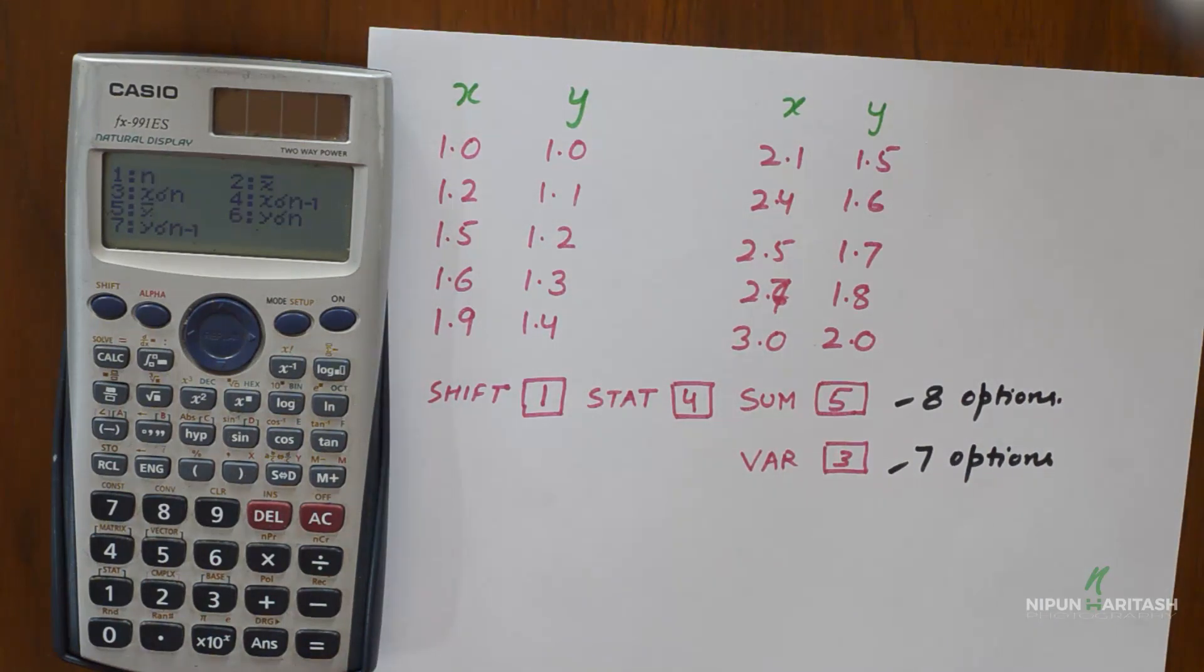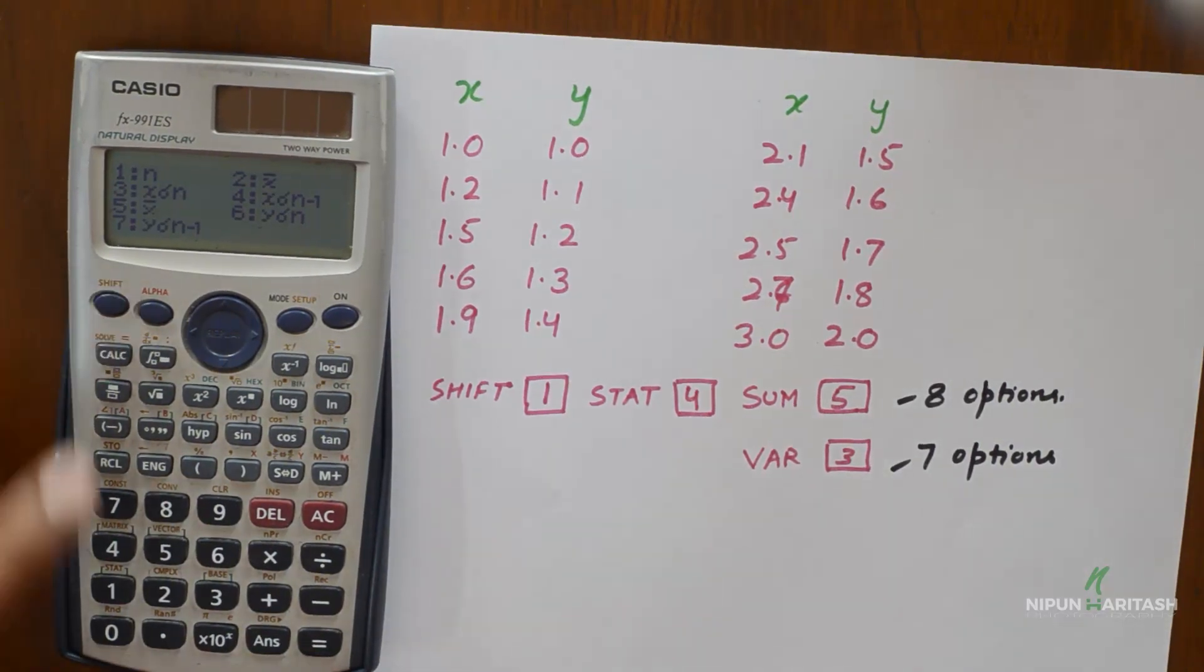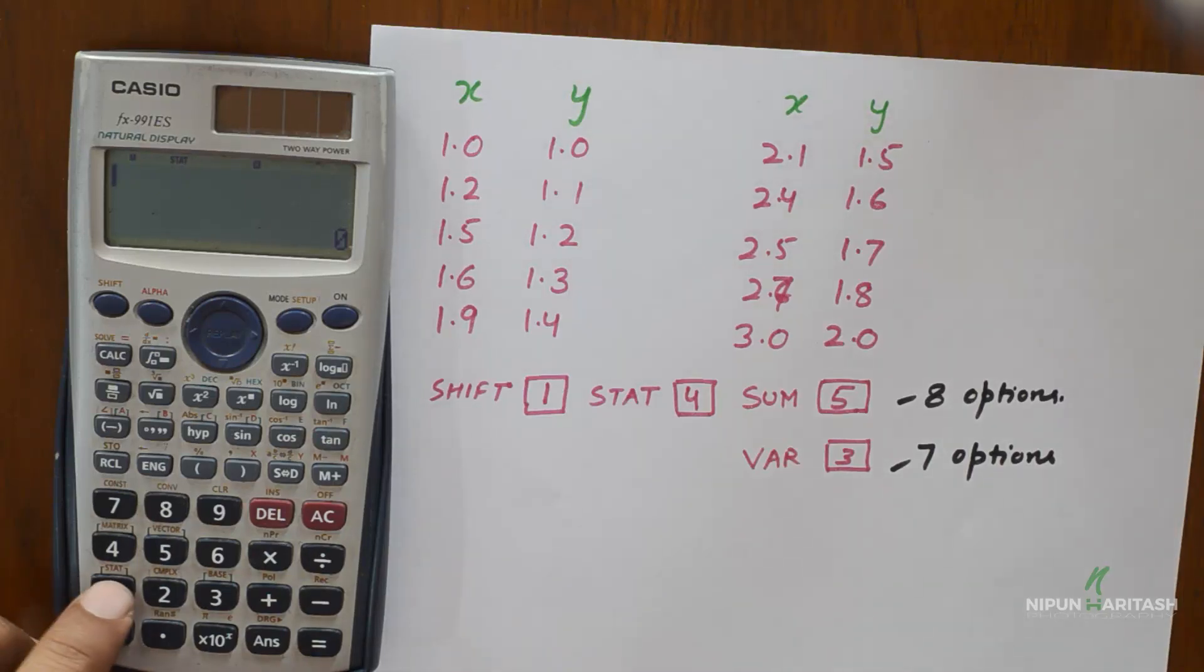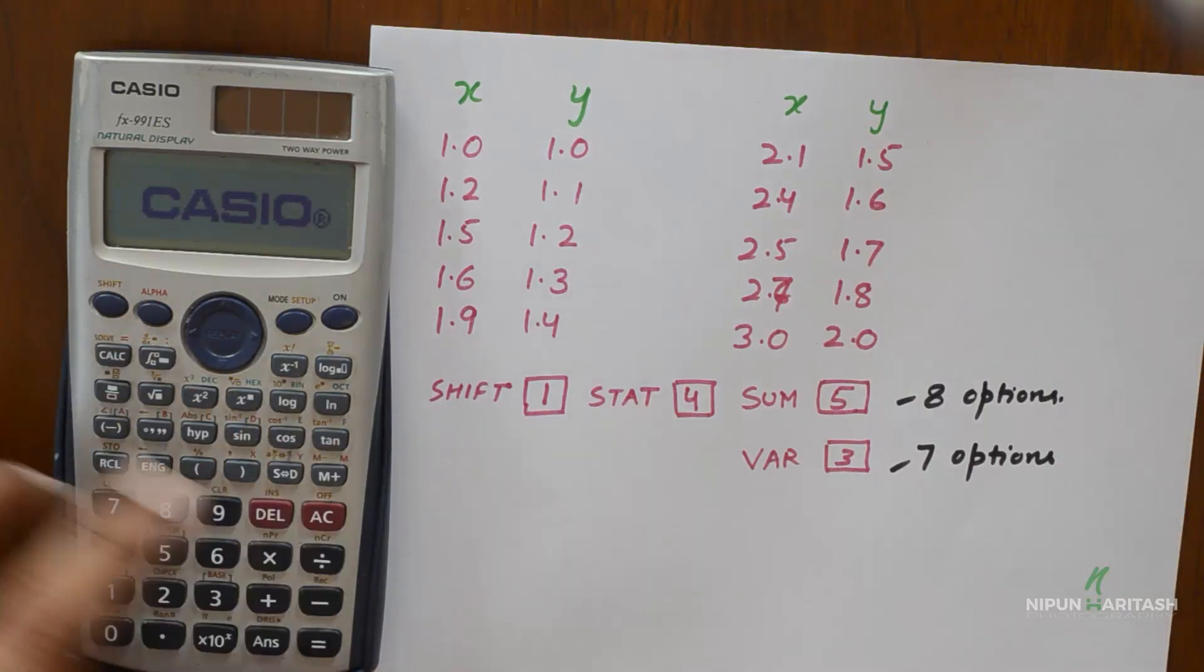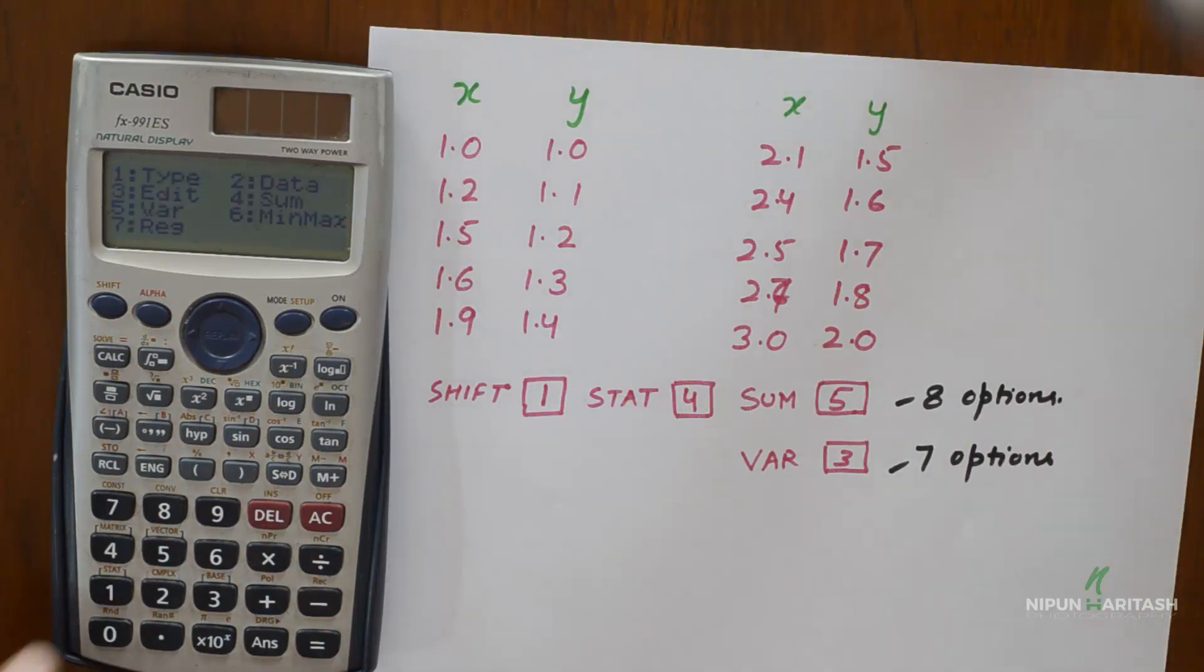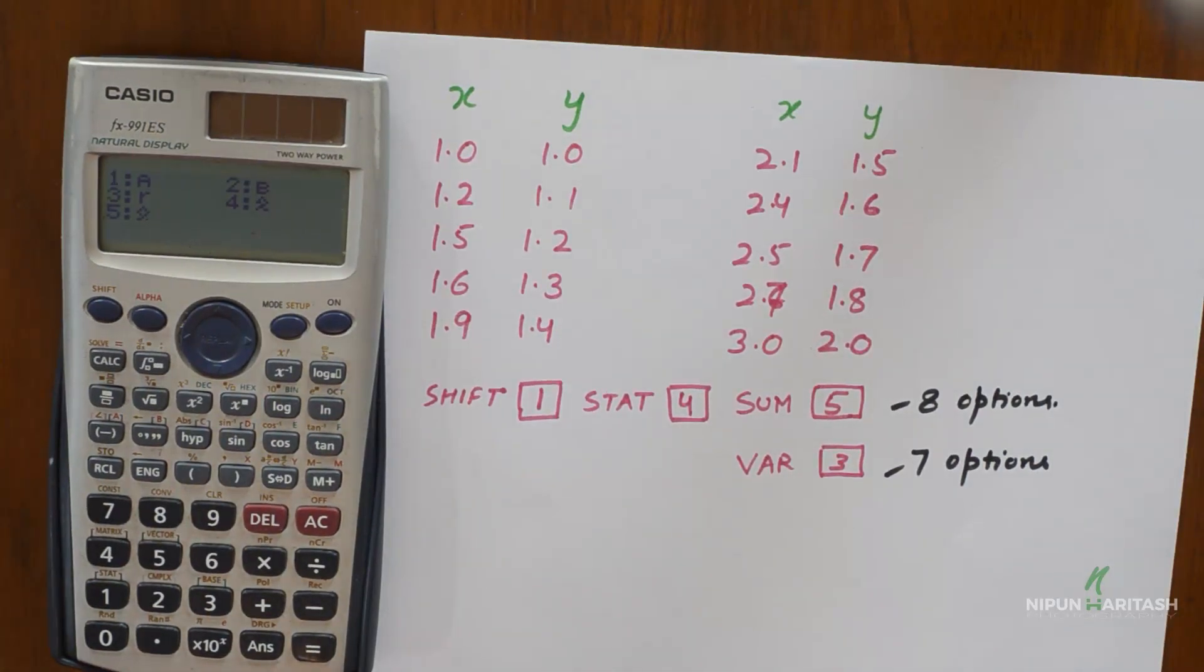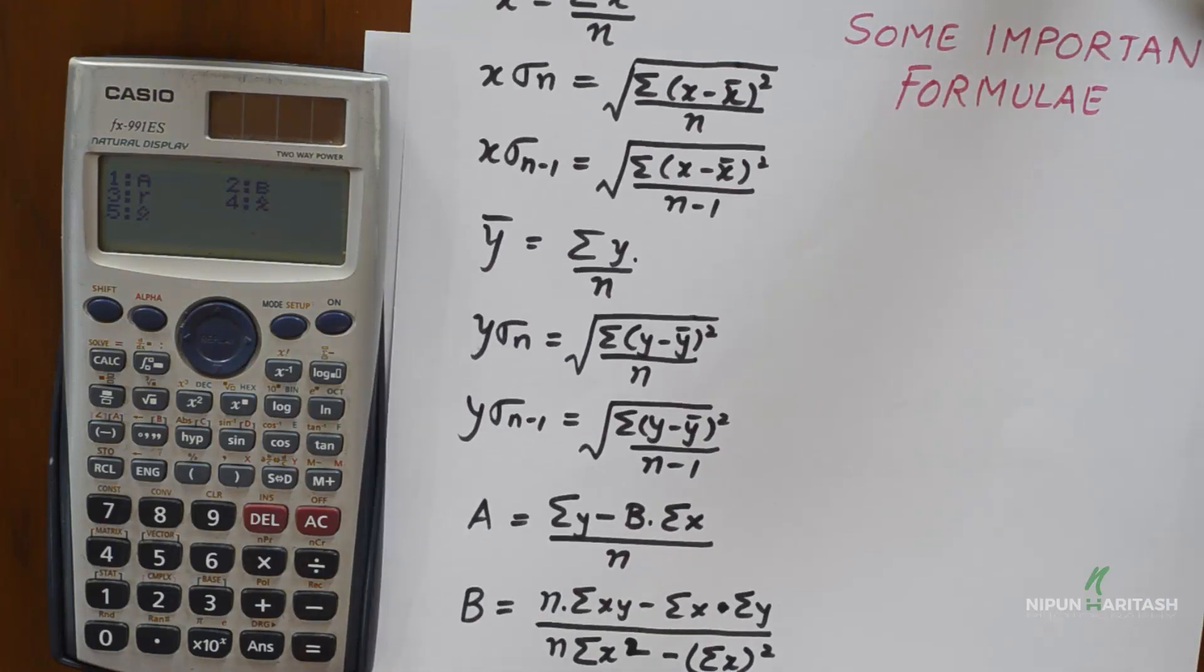The first option is to calculate n then mean and so on and so forth. And then we go to shift and press stat. Press on shift then stat. Then press 7. And then you get the options to calculate a, b, r, x cap and y cap.